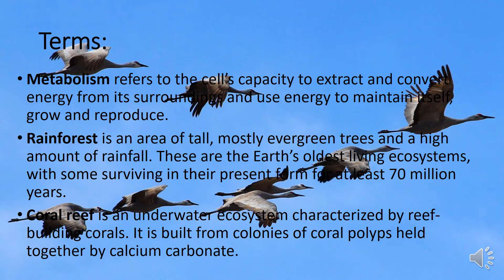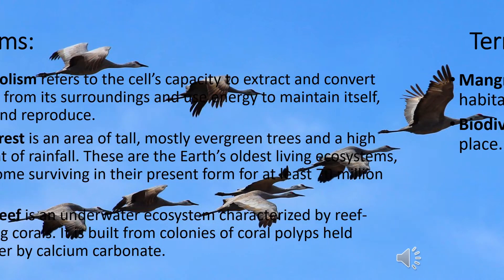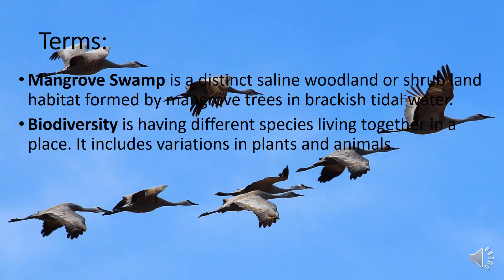Rainforest is an area of tall, mostly evergreen trees and a high amount of rainfall. These are the Earth's oldest living ecosystems, with some surviving in their present form for at least 70 million years. Coral reef is an underwater ecosystem characterized by reef-building corals, built from colonies of coral polyps held together by calcium carbonate. Mangrove swamp is a distinct saline woodland or shrubland habitat formed by mangrove trees in brackish tidal water. Biodiversity is having different species living together in a place, including variations in plants and animals.